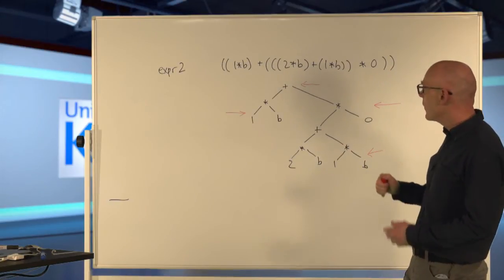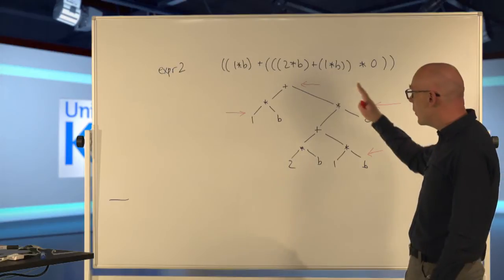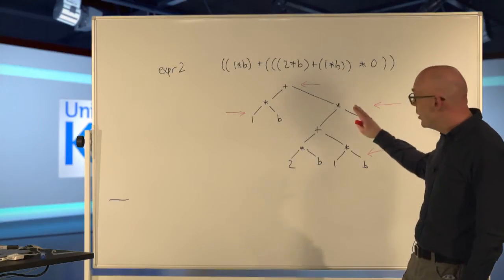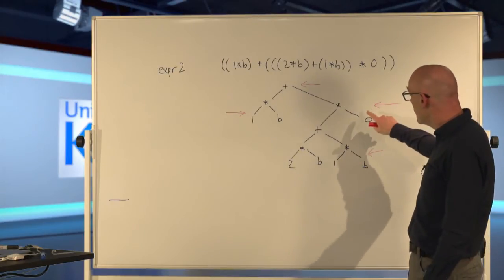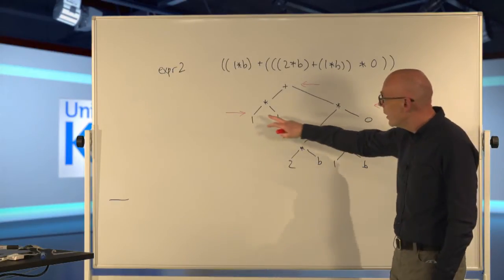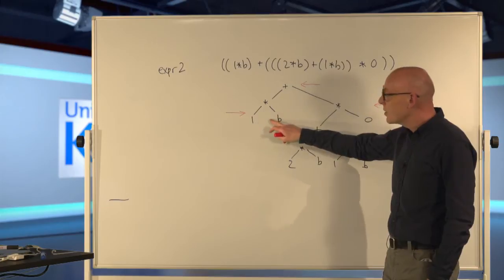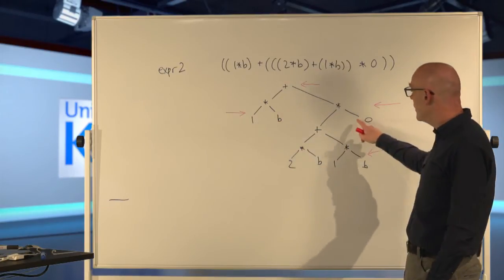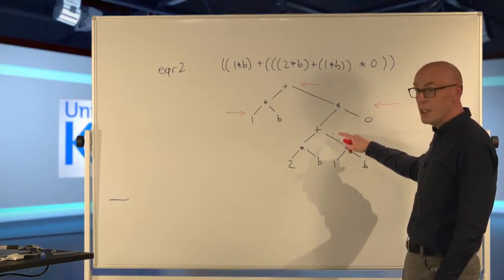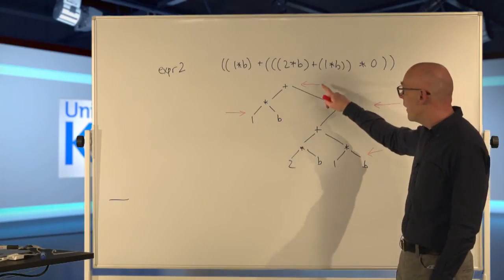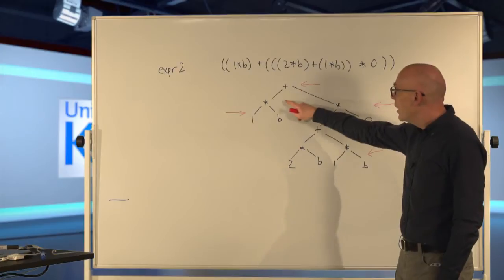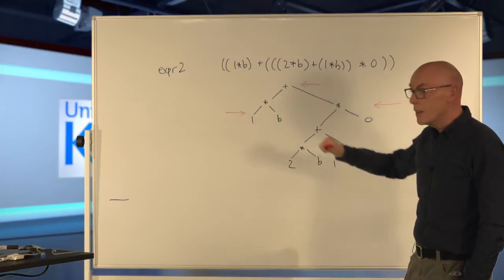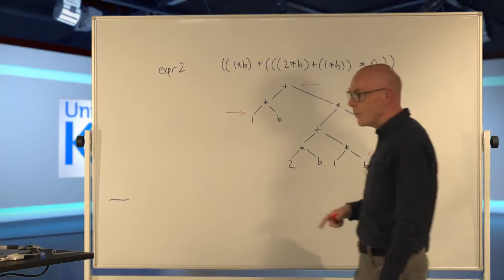So we have a number of rules that we can apply: one times something is something; zero times something is zero; and zero plus something is the thing we started with.